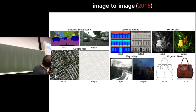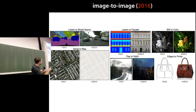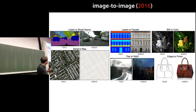Here we have labeled street view scenes — hand-labeled views from a car, semantically annotated: cars, road, trees, sky. The model learns to generate a realistic street scene from those labels. This is not a photograph; this is generated by the model. Similarly, this facade is generated by the model. That's from 2016, two years ago.